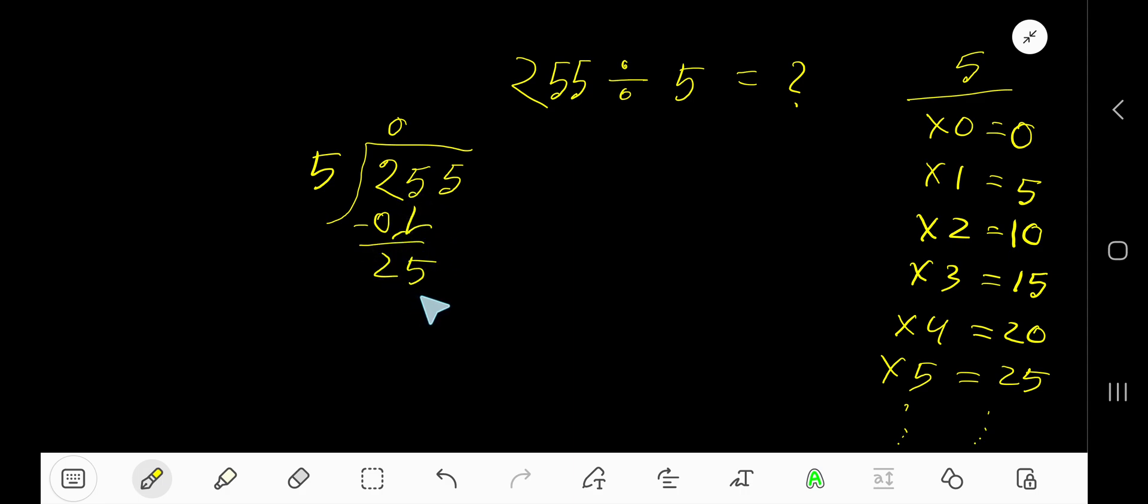5 goes into 25 how many times? 5 goes into 25 five times. 5 times 5 is 25. Subtract to get 0. Bring down this 5.